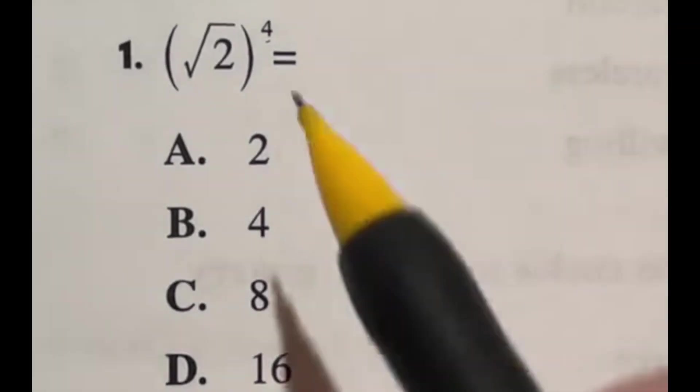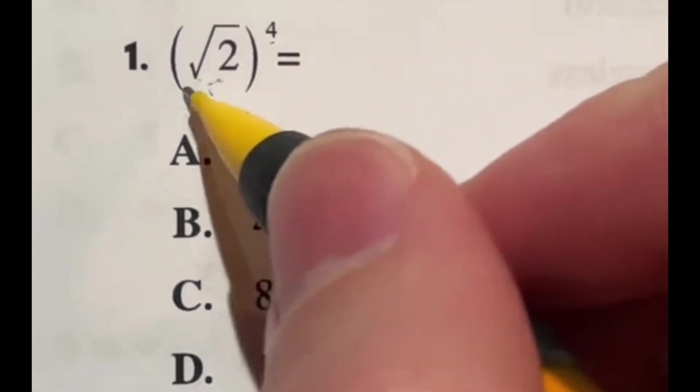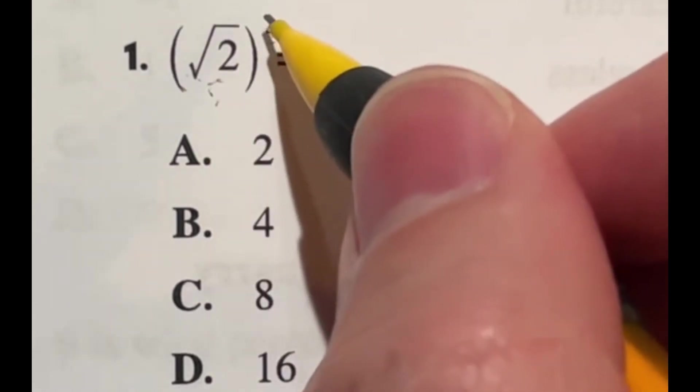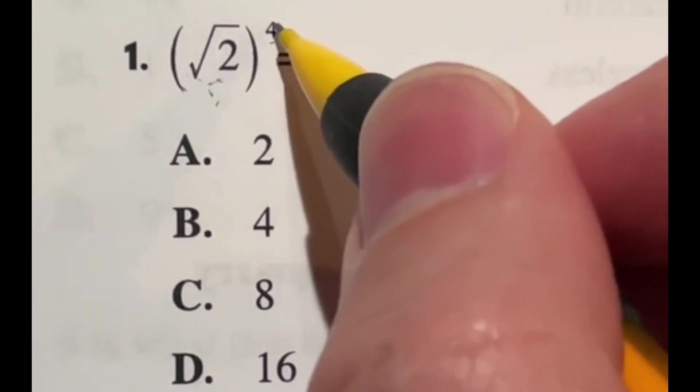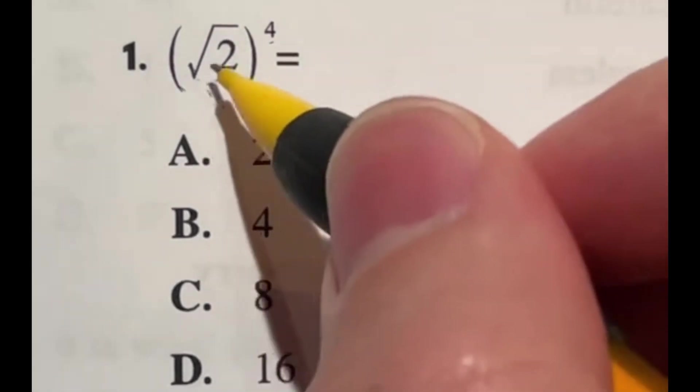So first off, this square root 2. Well, I don't know if you knew or not, but square root can cancel out with squared. So really you would just be able to cancel out the square root and cancel out the 4 into a 2. And then you would just have 2 squared, which would be 4. But let's talk about why that is.